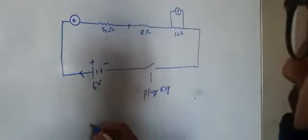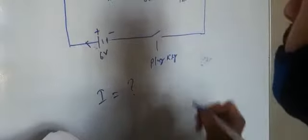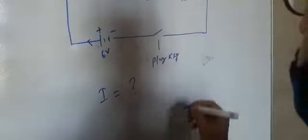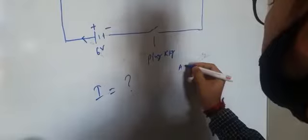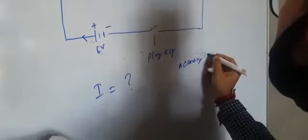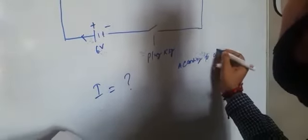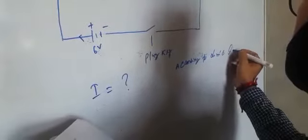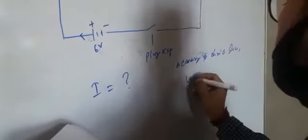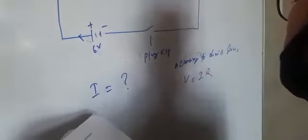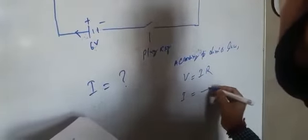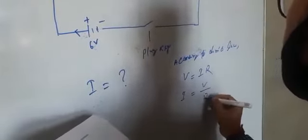So first we find the current I. According to Ohm's law, V equals IR, and current I equals V divided by R.